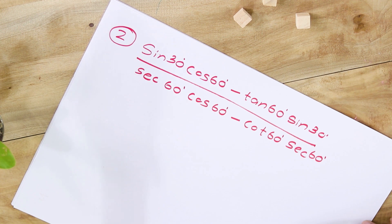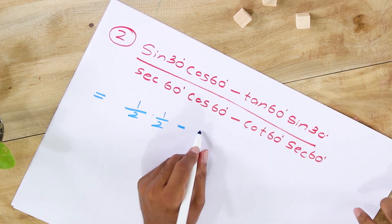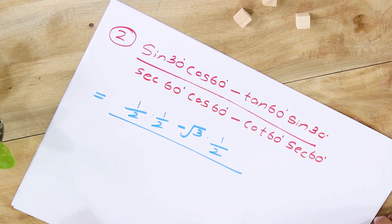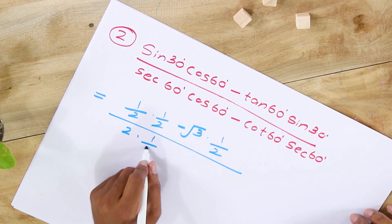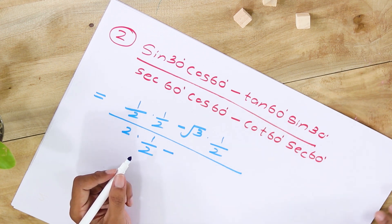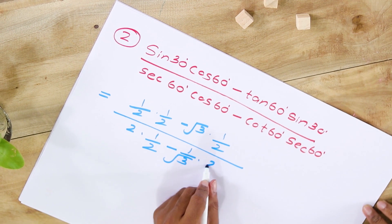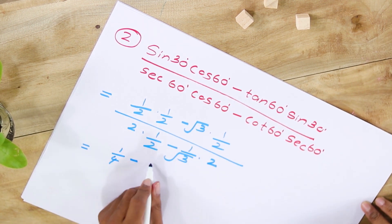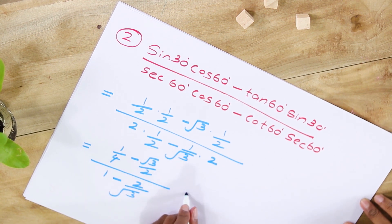Now the second problem. We have: [sin 60° · cos 60° − tan 60° · sin 30°] / [sec 60° · cos 60° − cot 60° · sec 60°]. Substituting: sin 60° = √3/2, cos 60° = 1/2, tan 60° = √3, sin 30° = 1/2, sec 60° = 2 (reciprocal of cos 60° = 1/2), cot 60° = 1/√3 (reciprocal of tan 60° = √3). This gives us the numerator: 1/4 − √3/2, over the denominator: 1 − 2/√3.